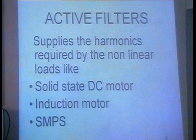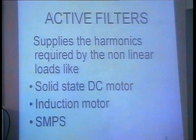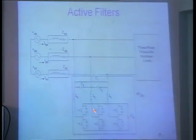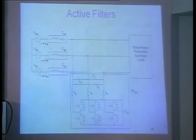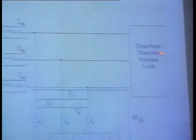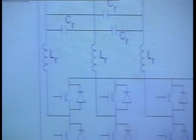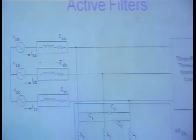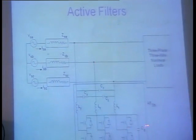Today's loads in our utility are highly non-linear. So what is the role of the active filter? The non-linear load at the receiving end needs 50 Hz current and also high-frequency harmonic currents. The 50 Hz current is supplied by the alternator, and the high-frequency harmonic current is supplied by the active filter.